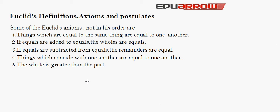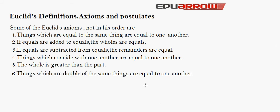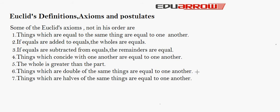Axiom 5: The whole is greater than the part. This gives us the definition of 'greater than' — if A is greater than B, it means B is a part of A, and there exists some C such that A equals B plus C. Axiom 6: Things which are double of the same thing are equal to one another — if triangle B is double of triangle A, then they are equal. Axiom 7: Things which are half of the same thing are equal to one another — if A is half of B, they are equal to each other.